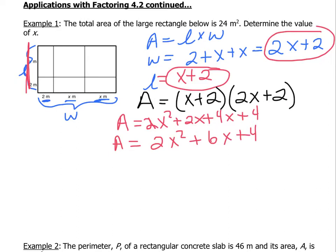Now we also have the information that the total area is 24 meters squared. So we have A written right here. So instead of the letter A, what we're going to do is replace that with the value of 24. So now we have 24 equals 2x squared plus 6x plus 4.